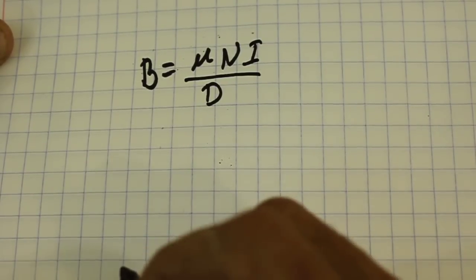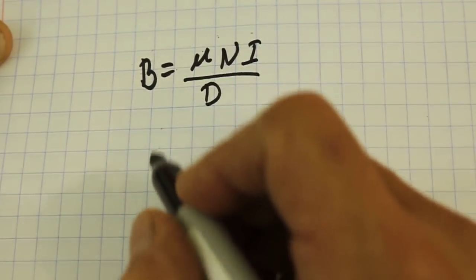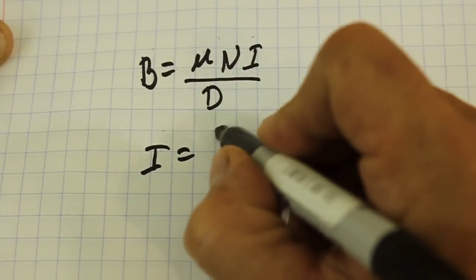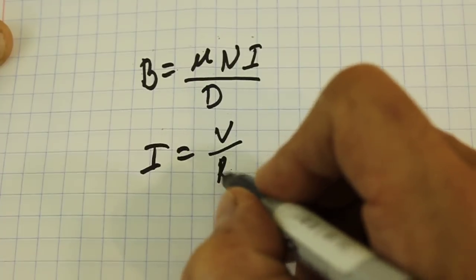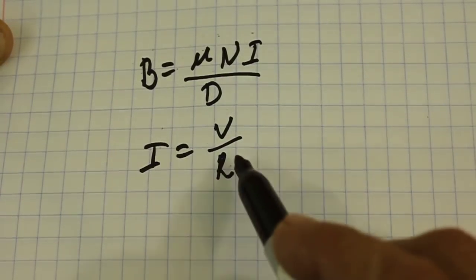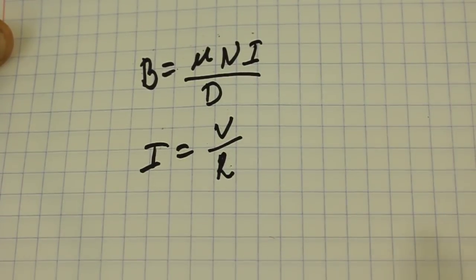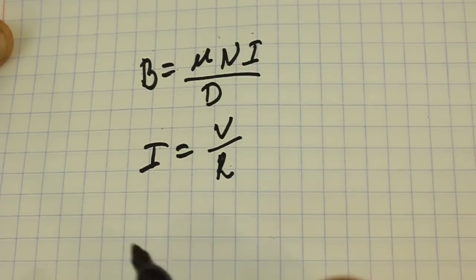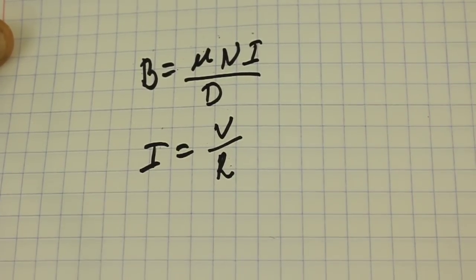This is because of Ohm's law that says that current equals voltage divided by resistance. If the resistance of the coil is higher then for the same voltage we will have less current in the coil.